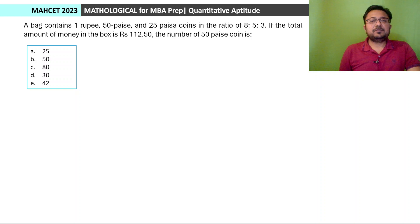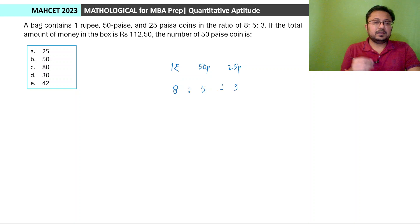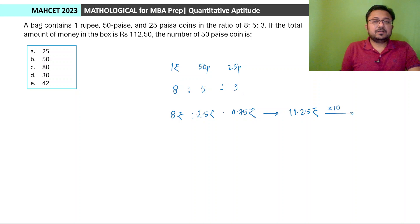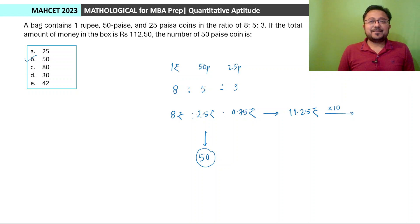Next question: A bag contains one rupee, fifty-paise, and twenty-five-paise coins in the ratio of 8:5:3; total amount is Rs. 112.50. How many fifty-paise coins? Assuming 8, 5, and 3 actual coins: value = 8×1 + 5×0.50 + 3×0.25 = 8 + 2.5 + 0.75 = 11.25 rupees. But actual total is 112.50, which is ten times. So all coin counts are ten times: 50 fifty-paise coins. Option B.